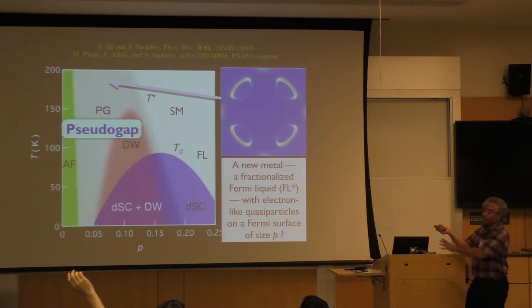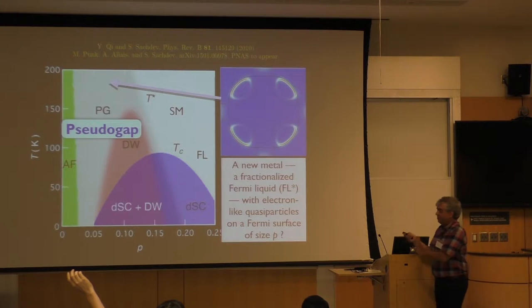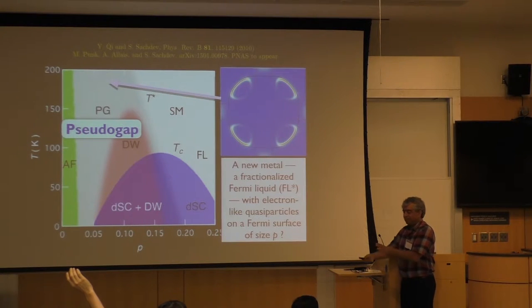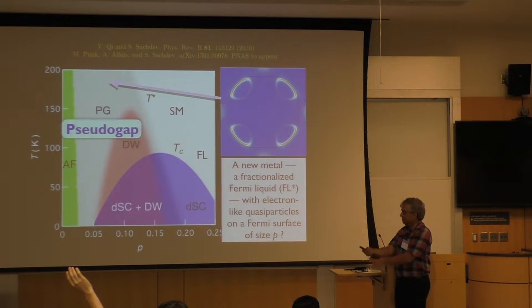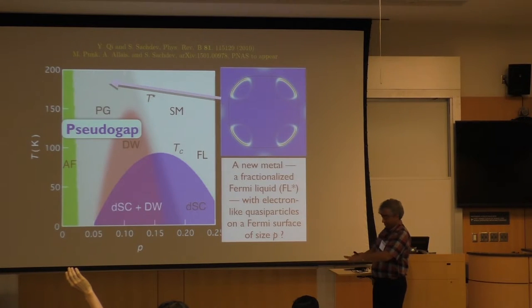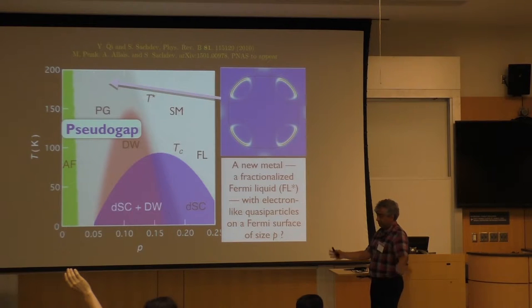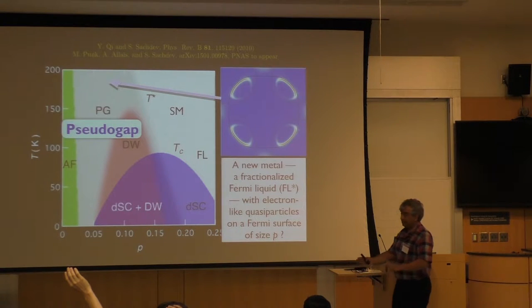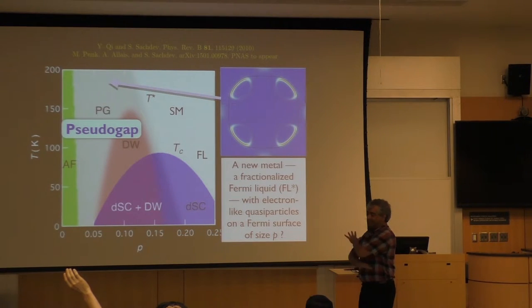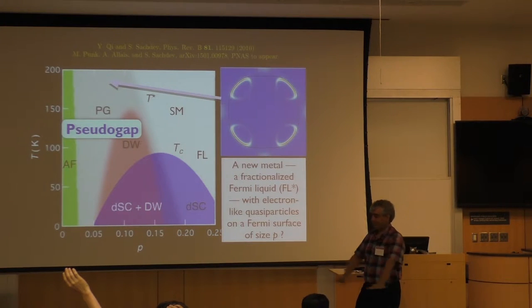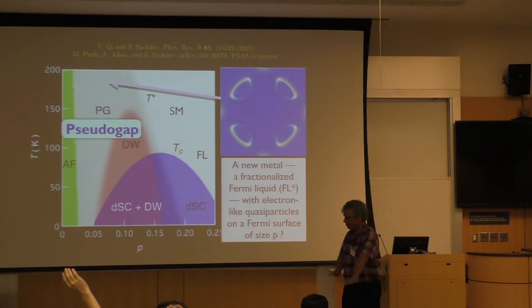Photoemission is a bit of a complicated probe because it's actually removing an electron from the sample. When you remove the electron from the sample, you're very sensitive to exactly how the electron is arranged in terms of all these dimers. But if you're doing transport, you're not removing anything — these green dimers look just like ordinary quasiparticles, they're all happy to live in the plane.